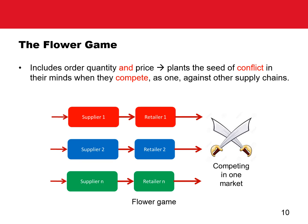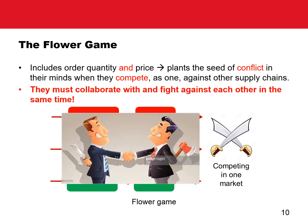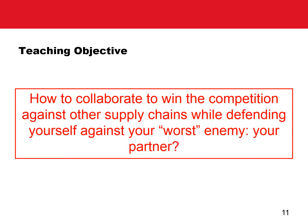The goal of the game is to bring two parties — the trading partners — into one team to fight against a bigger and common enemy: the other competing supply chains. The game simulates not just the harmony of supply chain coordination, but also conspiracy. This is the teaching objective: how to collaborate to win the competition against other supply chains, while defending yourself against your worst enemy — your partner.